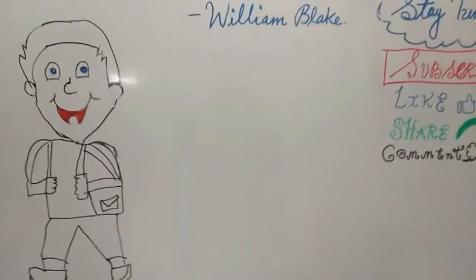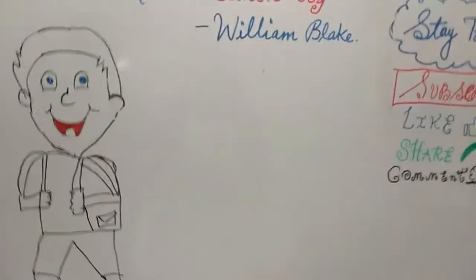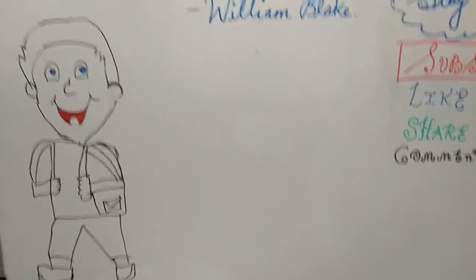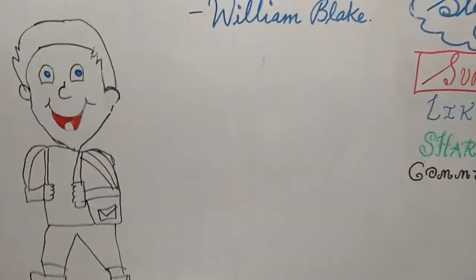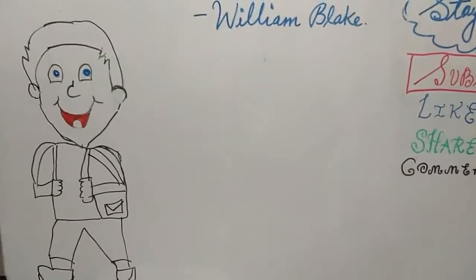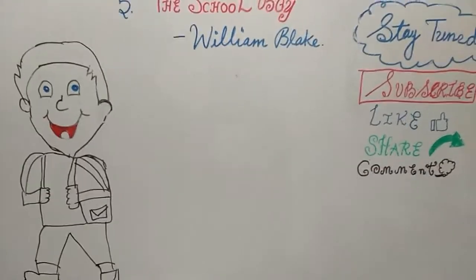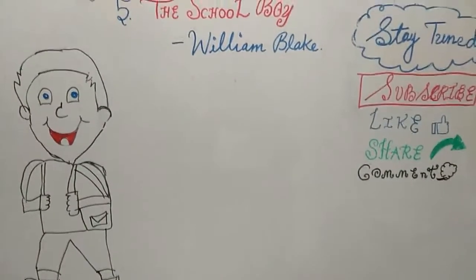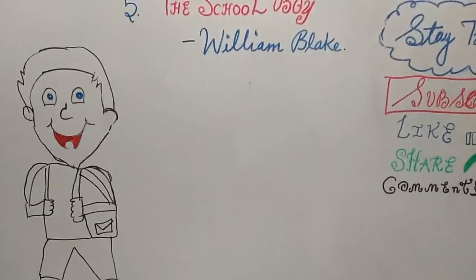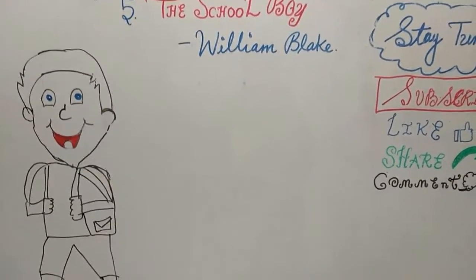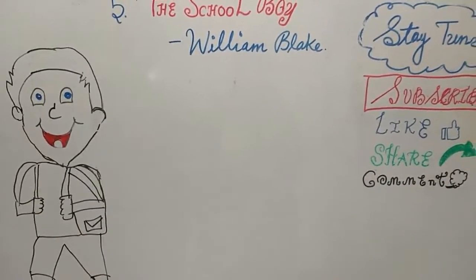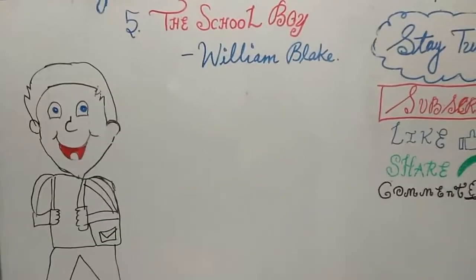Coming to the third stanza: 'Ah, then at times I drooping sit.' He says that he sits in a drooping position. Drooping means very sad — he is saggy and spends the whole time like he doesn't like to sit inside the class, nor does he have any affection towards his book. He feels that when the teachers are teaching it's quite boring, and he doesn't like the class or the period.